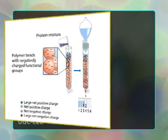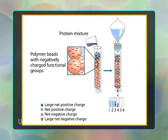In ion exchange chromatography, the stationary phase has charged ions. When the sample is passed through, it retains all molecules with opposite charge and releases others. So the above-mentioned types of chromatography are theoretically classified, but practically we have only 11 types of chromatography.